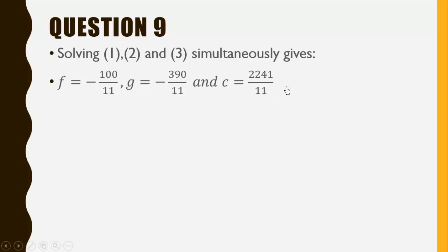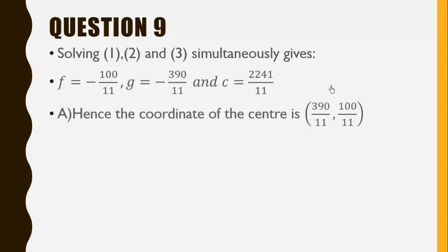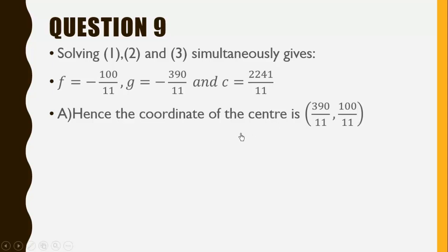Now our center will be (-g, -f). So the negative of negative 390 over 11 is 390 over 11, and the negative of negative 100 over 11 is 100 over 11. So the center of our circle is (390/11, 100/11).